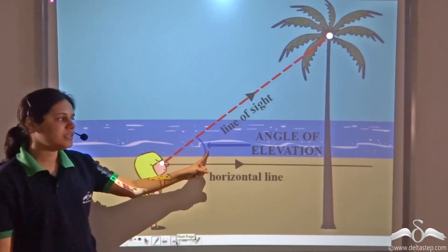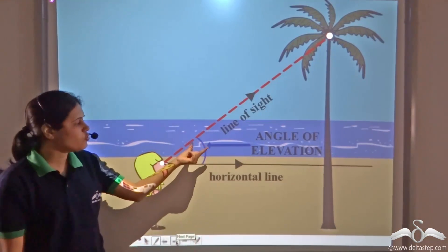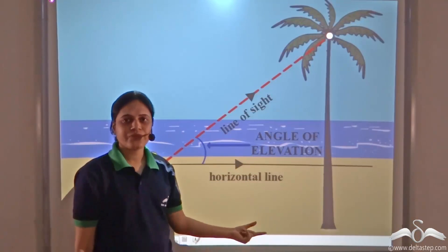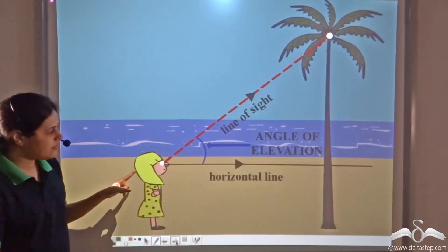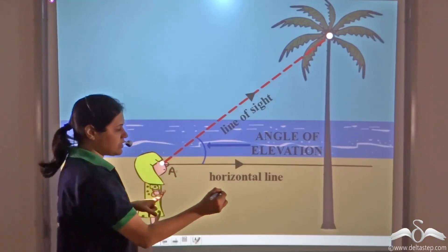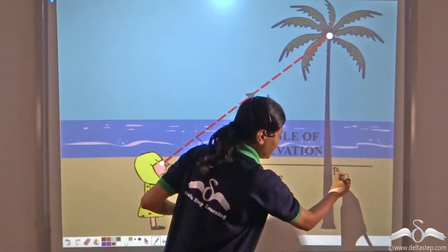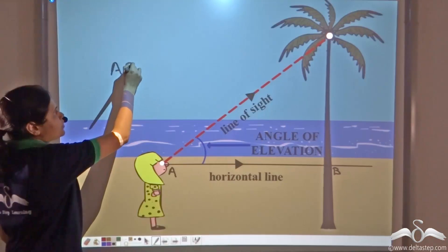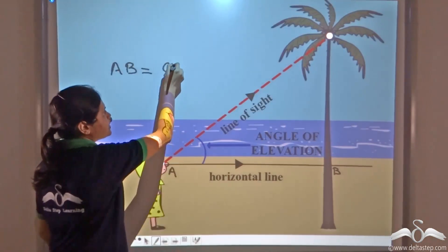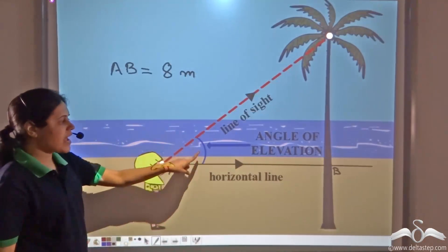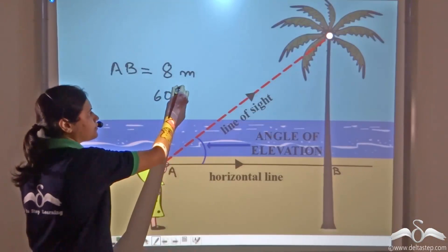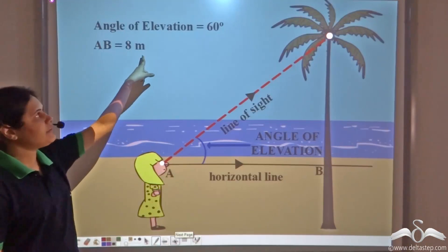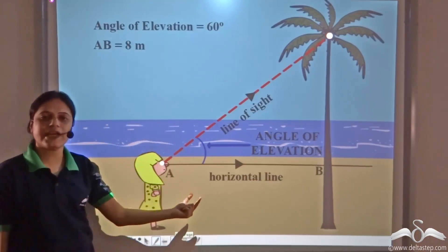So this angle is called the angle of elevation. Using this angle of elevation, we can find the height of the tree. Suppose this little girl finds that the distance between her and the foot of the tree is 8 meters, and the angle of elevation is 60 degrees.